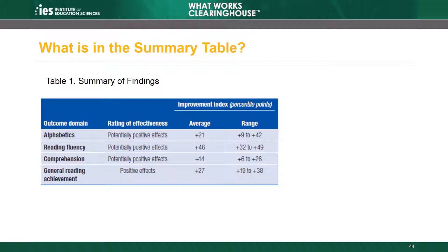The studies in this report found that the average comparison student would increase his or her performance in the alphabetics domain by 21 percentile points if he or she received Reading Recovery. This means the average comparison student who was scoring at the 50th percentile before Reading Recovery would score at the 71st percentile after participating. Another column is the range of improvement index, which indicates the range of performance increases seen in the studies. For example, the improvement index is at least 9 and higher than 42 percentile points for the outcomes in the alphabetics domain reported in the two studies that contributed outcomes to the domain.